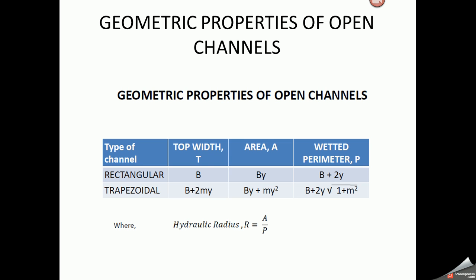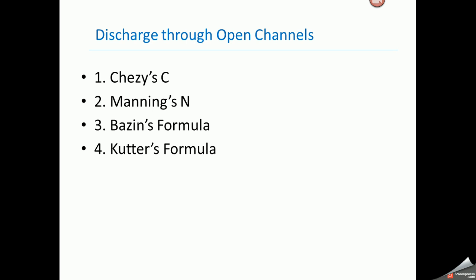Next are the geometric properties of open channel. Here you can see the type of channel and shape. For a rectangular channel, the top width is B, area is B times Y, and wetted perimeter is B plus 2Y. For a trapezoidal channel, the top width is B plus 2MY. Discharge through open channel is calculated by different formulas: Chezy's formula, Manning's formula, Bazin's formula, and Kuttle's formula.